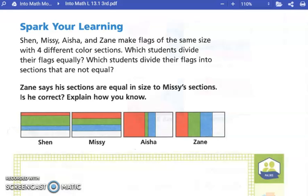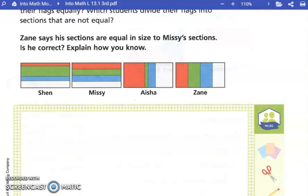But it's just because they're drawn a different way. If we perhaps cut these and made them fat, Missy's flag, and made them into fat pieces, we could probably cover his flag with her stripes. So is Zane correct? Yes, he is.